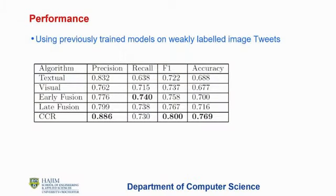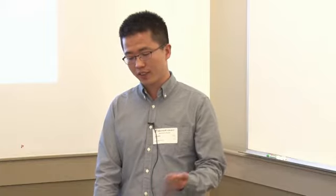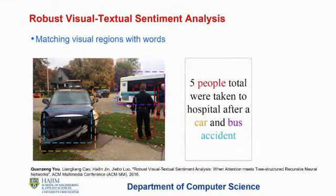Here's the performance. Our results on the weakly labeled image-tweet dataset are much better compared with baselines: text-only, visual-only, early fusion, and late fusion. Based on these results, we developed a second model. The motivation for the second project is to design a more robust model to learn features.